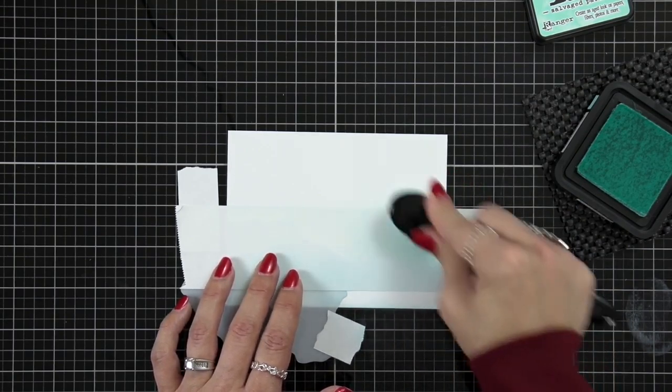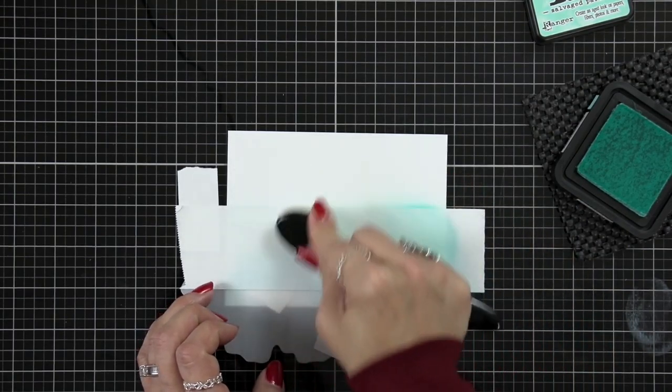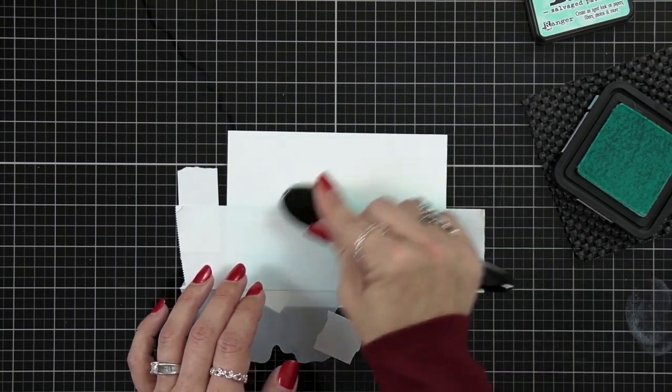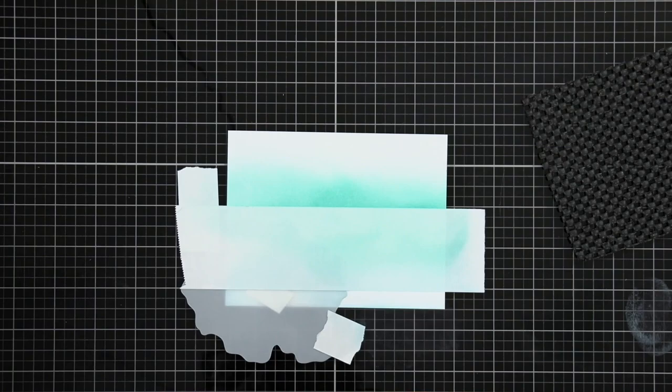For the background I had just moved my post-it tape so I masked off the bottom portion. I lined that up with that line that I had just created and I'm starting with a salvaged patina distress ink.